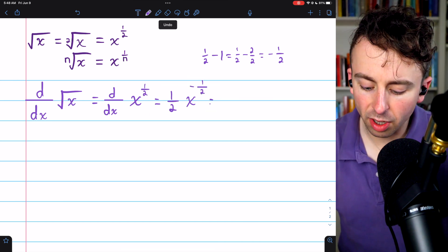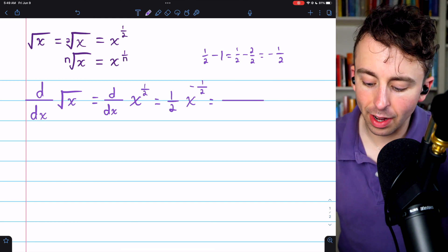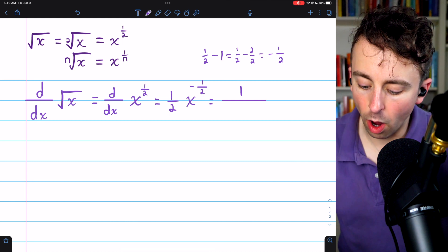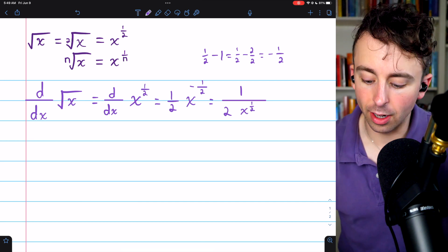You could leave it like that, though sometimes it's preferable to write the negative exponent as a positive exponent. In that way, we could rewrite this as 1 over 2 times x to the positive half, now that we're down in the denominator.